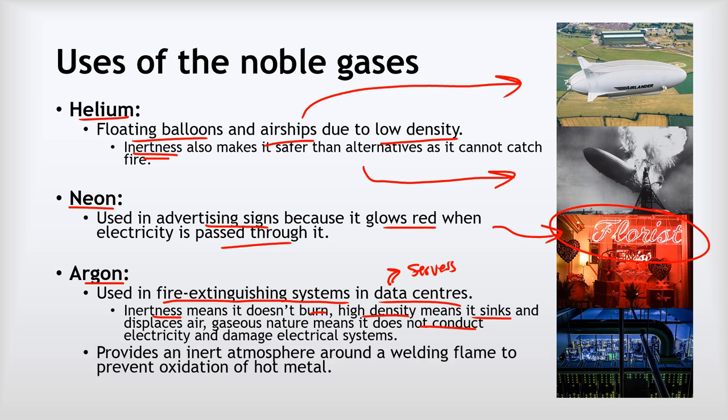Argon is also used in welding to provide an inert atmosphere around a welding flame. When a welding torch is joining two pieces of hot metal, the metal can get so hot it starts to react with oxygen in the air, so a blanket of argon gas is used around it — because argon prevents the oxidation of that hot metal.